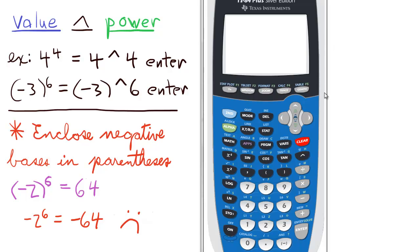In raising a value to a power, we just take the base, in this case 4, and raise it to the 4th by using the caret symbol, C-A-R-E-T. So raise it to the 4th and enter. 4 to the 4th is 256.